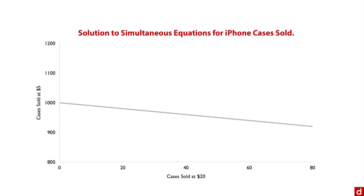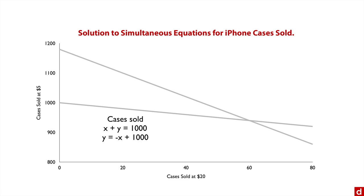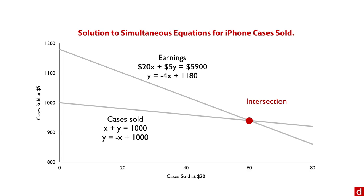Here's the first line, which indicates cases sold. It was originally x plus y equals 1,000, rearranged to y equals negative x plus 1,000. Then we have another line which indicates earnings — originally $20x plus $5y equals $5,900 — rearranged to y equals negative 4x plus 1,180. The solution is right at the intersection: 60 on the number of cases sold at $20 and 940 on the number of cases sold at $5. That represents the solution of these joint equations and is a graphical way of solving a system of linear equations.